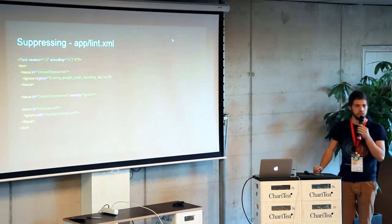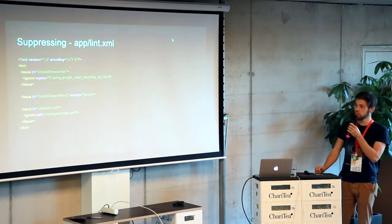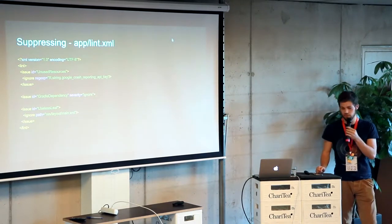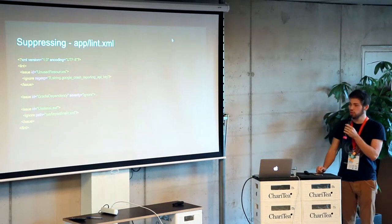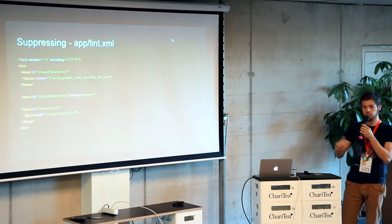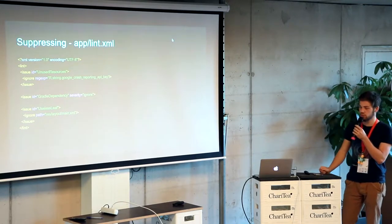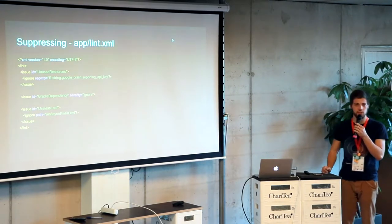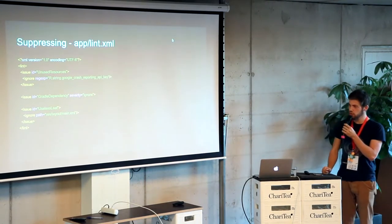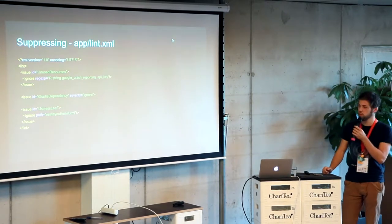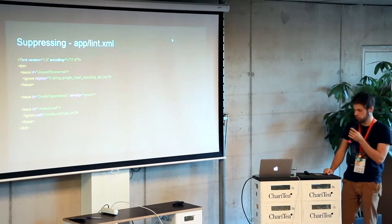Another way to ignore something is by using the Lint XML file. You can have that in your app directory, and every issue has an ID - for instance, unused resource. You can say okay, for all of those strings matching that regex, I don't want this checked. Or you can also ignore it entirely, like the Gradle dependency check. And then another option is using a path, so you can specify: for this layout file, I don't want that check turned on.